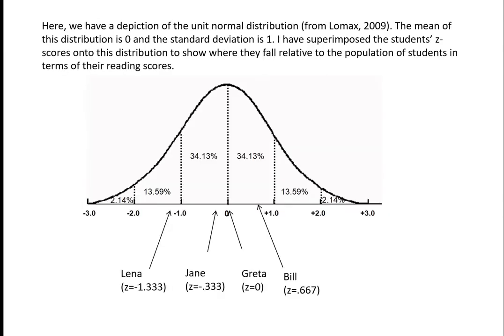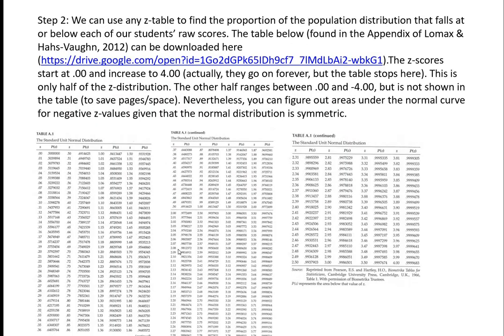To provide a visualization of where these individuals fall, assuming the distribution of reading scores is normal in shape, this is where each of these individuals would fall relative to the unit normal distribution. Given our computation of z-scores, we can now use any z table to find the proportion of the population distribution falling at or below each student's raw score. I have a link to the appendix from Lomax and Haas-Vaughn (2012), which contains a z table.